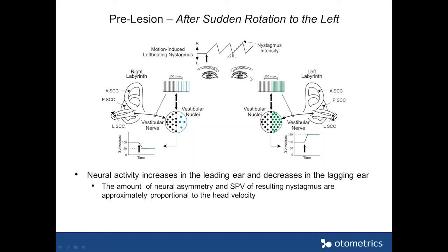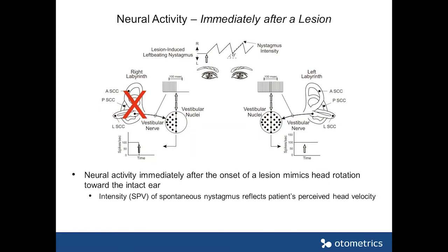The purpose of nystagmus is to keep your eyes stationary on the target — so when your head moves to the left, your eyes will slowly move to the right. The intensity of this nystagmus, or the slow phase velocity, is directly proportional to the head velocity.